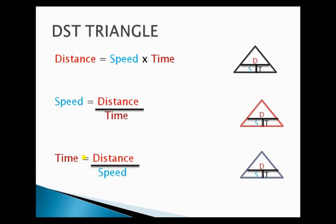So the DST triangle will help us remember the formula to calculate distance, speed, and time. If you are asked to find the distance, using the DST triangle you should just cover up the D. What remains is S and T, therefore we know that distance equals speed times time.